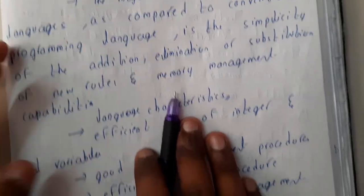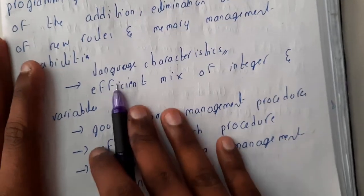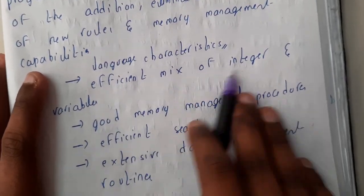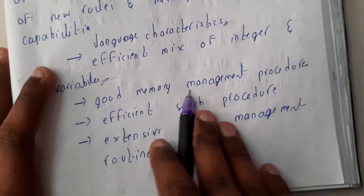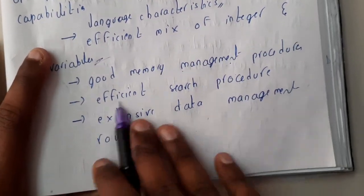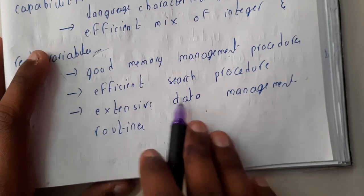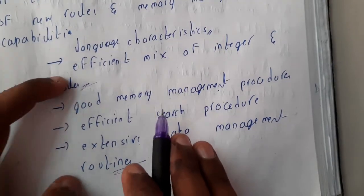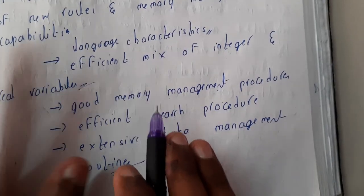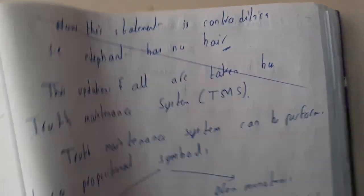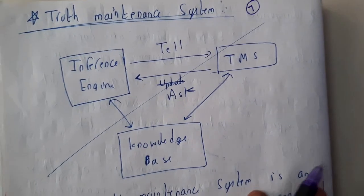A few language characteristics include an efficient mix of integers and variables, good memory management, efficient search procedures, and extensive data management routines. These are the key advantages of expert system languages like PROLOG and LISP. I hope everyone got a small idea about these languages.